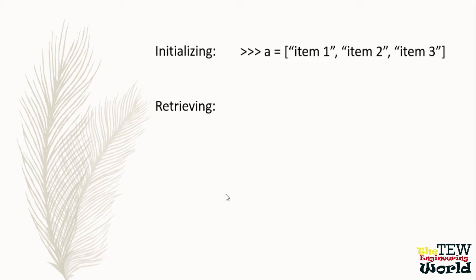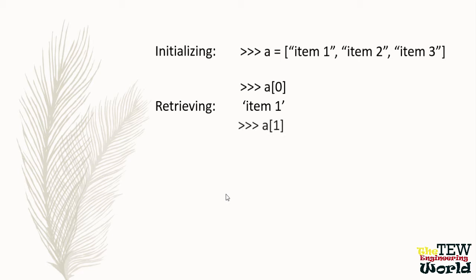To initialize a list, you can write equals item 1, item 2, and item 3 with square brackets, and this initializes a list named A with the three strings. To retrieve an element from this list, you can write A square bracket 0 which retrieves the first element, item 1, and A square bracket 1 retrieves the second element, item 2.